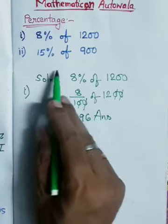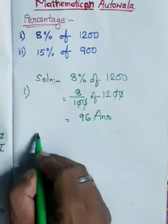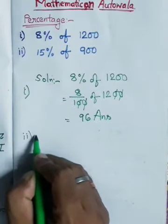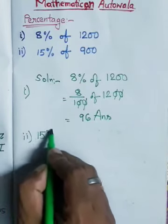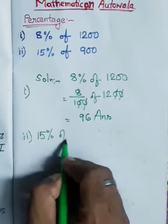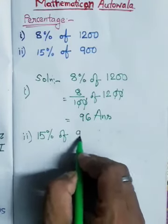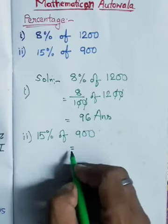Now second is 15% of 900. Number 2, 15% of 900.